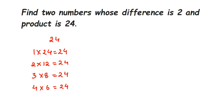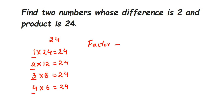6 × 4 and 4 × 6 are the same, so I'm not repeating it. 8 × 3 and 3 × 8 are also the same. 24 doesn't go into the 9 or 10 tables. So the factors of 24 are: 1, 2, 3, 4, 6, 8, 12, and 24.